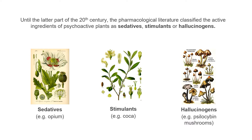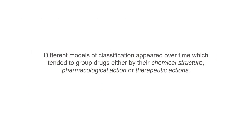Classifying drugs can be complex, and until the latter part of the 20th century drugs could be categorized by the main effects of the psychoactive substances found in nature: sedatives, stimulants, or hallucinogens. However, as times progressed and with new developments in the emerging fields of medicine and psychiatry, new drugs emerged and different models of classification appeared.